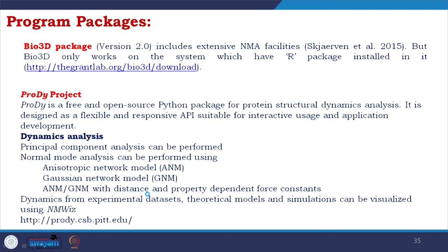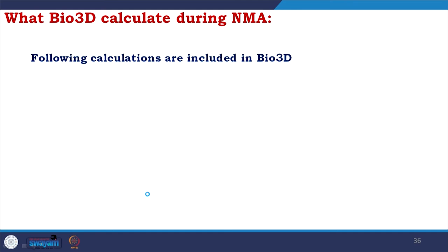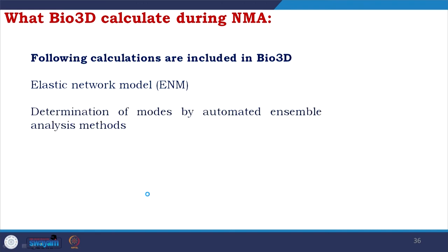ProDy is designed as a flexible and responsive API suitable for interactive usage and application development. In terms of dynamics, ProDy does principal component analysis and normal mode analysis using anisotropic network model (ANM), Gaussian network model (GNM), and ANM-GNM with distance and property-dependent force constants. Dynamics from experimental datasets, theoretical models, and simulations can be visualized using NMWiz, a wizard option. I will analyze a case study with the bio3D package. In terms of calculating NMA, bio3D develops the elastic network model (ENM), determines modes by automated ensemble analysis method, generates atomic displacement plots, and shows movement during transition from one state to another.